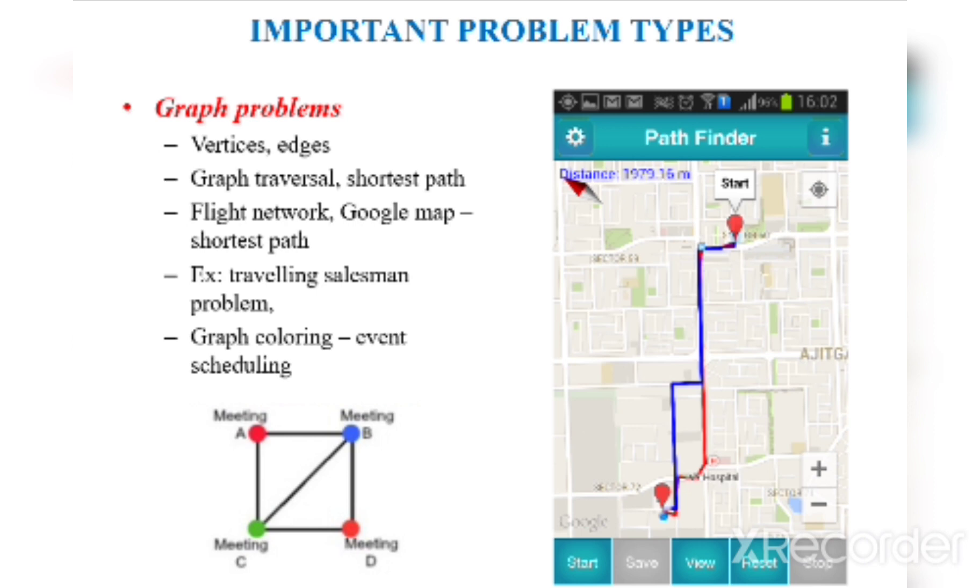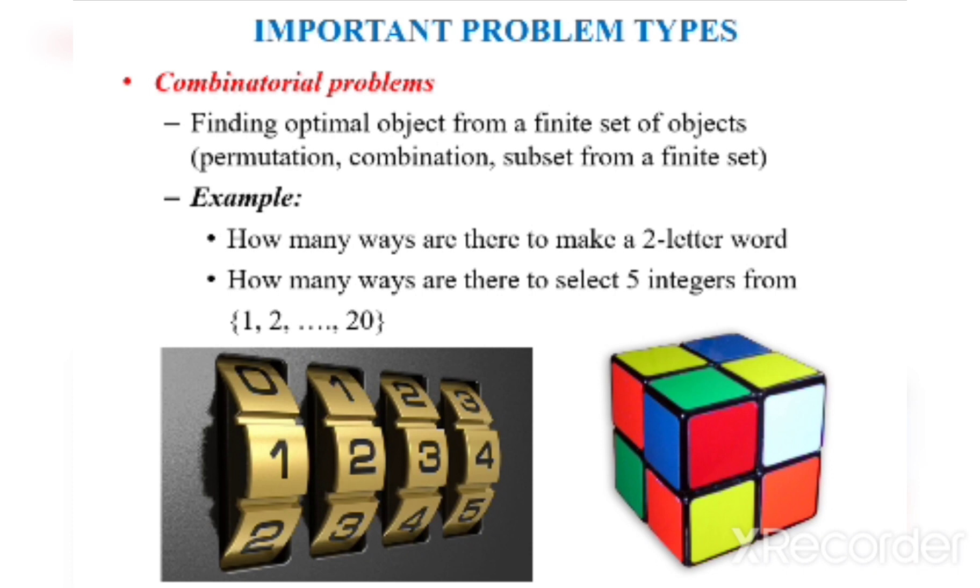For finding a map or the shortest path between our location and the end destination. The fifth one is combinatorial problems. Combinatorial problem is related to permutation and combination. Finding the optimal object from a finite set of objects, permutation, combination, subset from a finite set. For example, how many ways are there to make a two-letter word from a set of five letters?